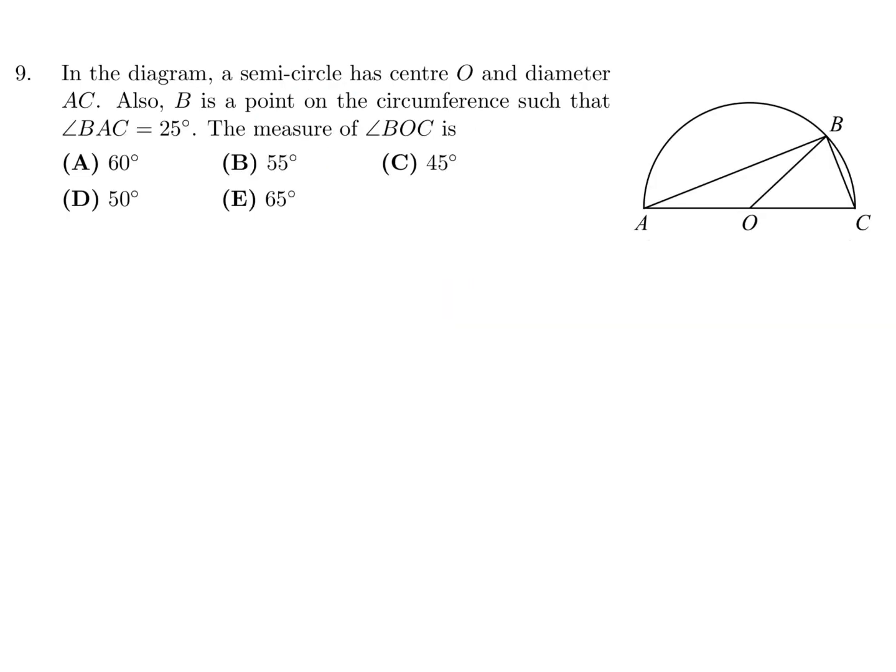In the diagram, a semicircle has center O and diameter AC. B is a point on the circumference, such that angle BAC is 25. What is the measure of BOC? So BAC, this is 25, right? And these are radii, OB and OC. And because AC is the diameter, by definition, that is going to be a right angle. So therefore, that angle would be 180 minus 90 minus 25, which is 65.